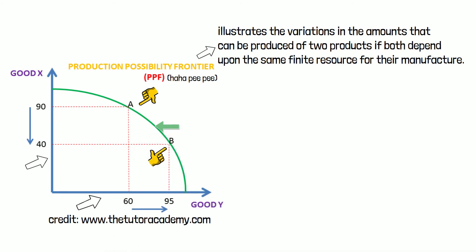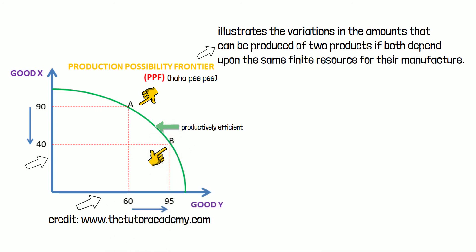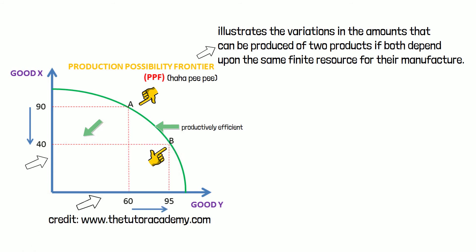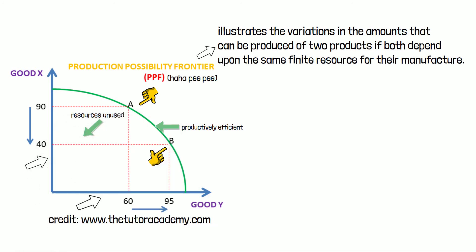All points on the curve are productively efficient. Why? Because all resources are used as efficiently as possible to produce the maximum possible output. If a point is inside the curve, it means that you left resources unused, and that's not efficient.